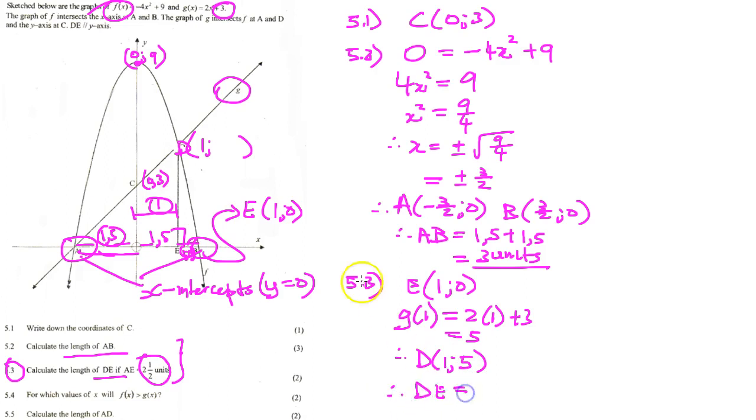Therefore the length I should say of DE is going to equal, from here the y-value is 5 and E is (1, 0). You can say 5 minus 0, which is top y-value minus bottom y-value, equals 5 units.